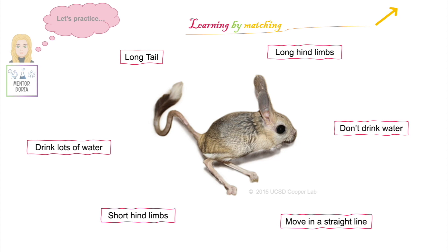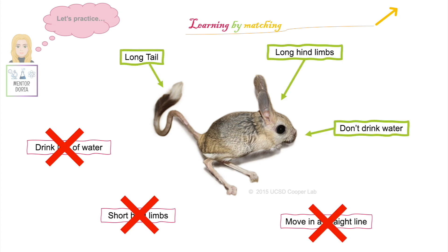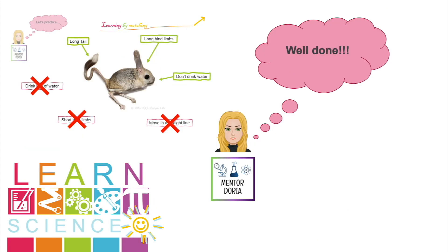Here is another learning by matching activity. In the middle of this slide you will see a jerboa. Around it you will see different labels which each have adaptations that the jerboa may or may not have. Feel free to pause the video now so you can have a go at this activity. The correct answers are highlighted here in green. Jerboas have long tails to help with balance. They also have long hind limbs, which refers to the limbs in the lower parts of the animal's body — this helps them with jumping. They also don't drink water as they get all the water they need from their food.